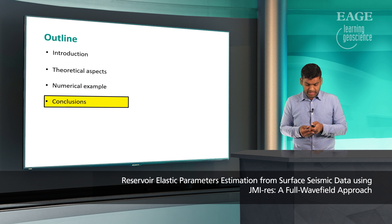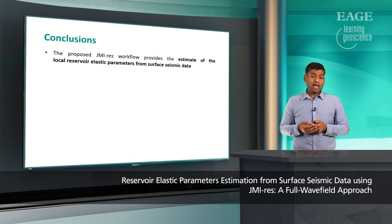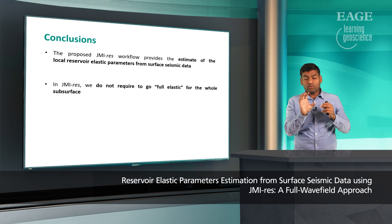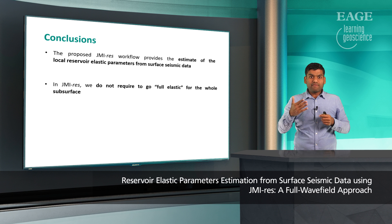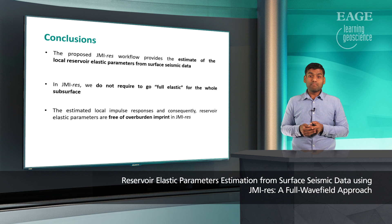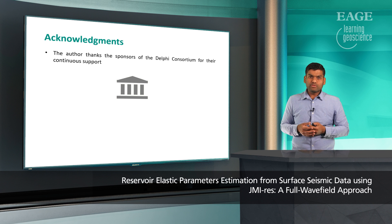Now we have reached the end of this presentation. The proposed JMI-RIS approach provides high-resolution local impulse responses and elastic parameters from surface seismic data, thanks to the correct handling of all orders of scattering in the redatuming part. This approach also avoids going fully elastic for the whole subsurface, applying local elastic FWI only to the target area. The estimated local impulse responses and reservoir elastic parameters are free of overburden imprint and are of much higher resolution compared to standard redatuming, courtesy of proper handling of internal multiples in JMI-RIS.